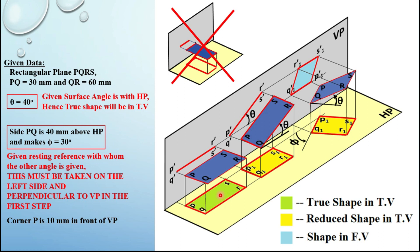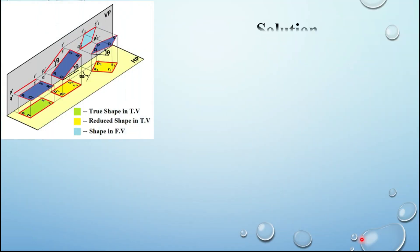In step two you draw the true shape first. Step three says draw the opposite view, so you draw the front view using projectors. Step four says draw the same view again considering the given surface angle. Then taking projectors down from that view, you obtain the reduced shape in top view. The next step is redrawing the top view at the given angle phi, and using projectors you complete the final front view. Green indicates the true shape in top view, yellow indicates the reduced shape in top view, and sky blue indicates the shape in front view.